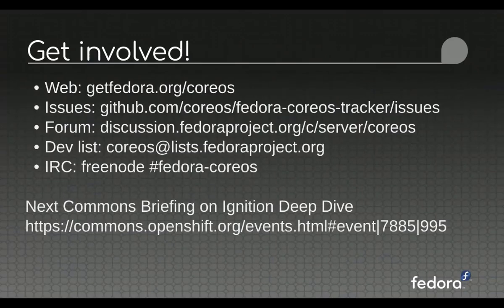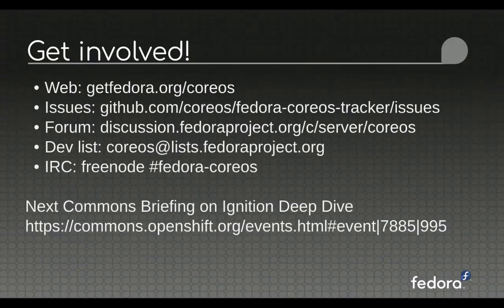How do you get involved? If you want the preview release, it's at getfedora.org/coreos. You can pick the platform — VM or bare metal or whatever — and all the different flavors are easily accessible. We have an issue tracker. Please get involved and let us know feedback, good, bad, or ugly. This is one of the things we really wanted to improve from past iterations: more active participation from the community and greater visibility and transparency in the process of building this. We encourage everybody not only to file issues but to join us on the forums as well.